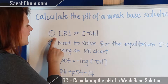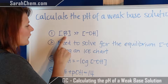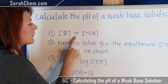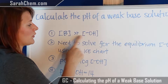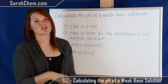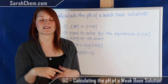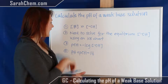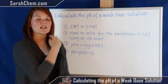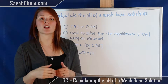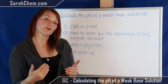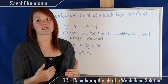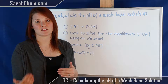The first is that the concentration of the base that you initially put into the solution is going to be much, much greater than the concentration of hydroxide that is produced. The second thing is that we're going to need to use an ICE chart to solve for the equilibrium concentration of the hydroxide produced in the solution.